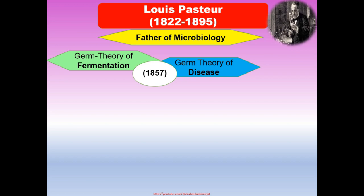However, spoilage was caused by other types of microorganisms called bacteria. In the presence of air, these bacteria could change the alcohol into acetic acid and other by-products. Pasteur gave the solution to the spoilage problem: heat the beer and wine just enough to kill most of these bacteria that caused the spoilage. This process was called pasteurization.